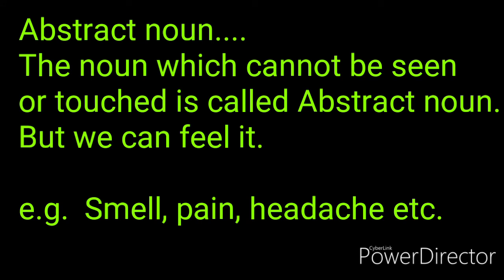Abstract noun: the noun which cannot be seen or touched is called abstract noun. Like smell, pain, headache, etc. — these things cannot be seen. We cannot see pain, we cannot touch it. But we can feel them — we can feel pain in our body, we can feel headache. So all things which can be felt but cannot be touched or seen are called abstract nouns. Abstract nouns have only one form — singular — so abstract nouns are also uncountable nouns.